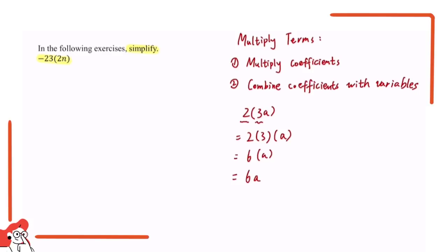Now let's do this question together. Negative 23 times 2n — as we can see, negative 23 is the constant value whereas 2 is the coefficient of the variable. So the first thing we want to do is multiply negative 23 by 2 and then combine it with the variable n. Negative 23 times 2 equals negative 46, which is the final coefficient. So negative 46 times n is simply equal to negative 46n.